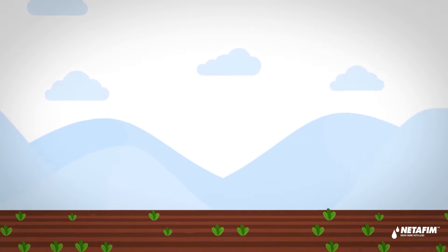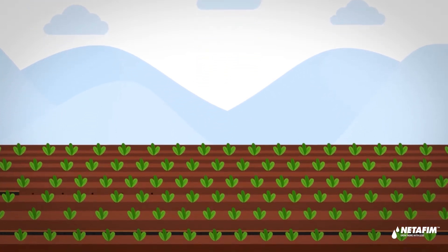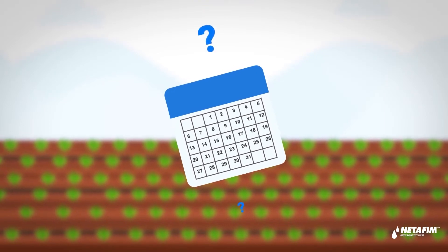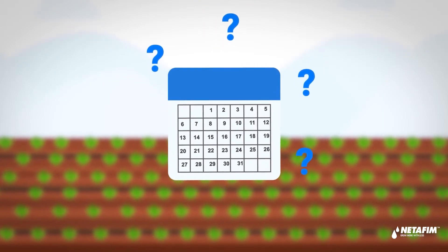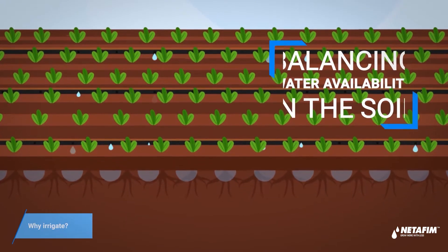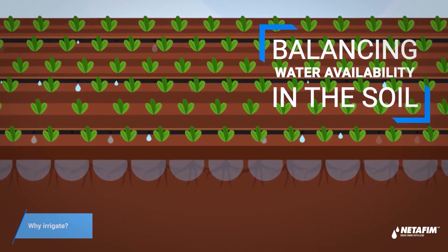So you made the big move to drip irrigation - smart move! It's now time to schedule your irrigation. Looks like a big deal? Don't worry, it's easy. Actually, irrigation is all about balancing water availability in the soil.